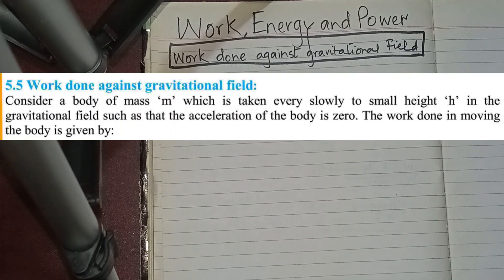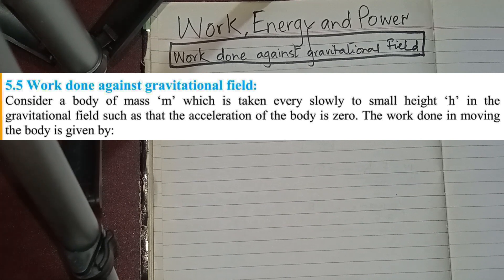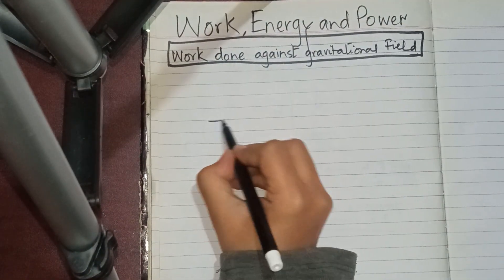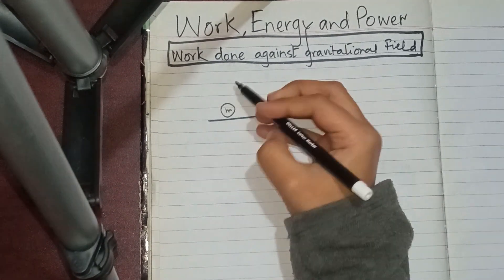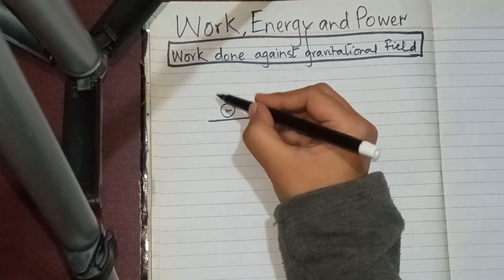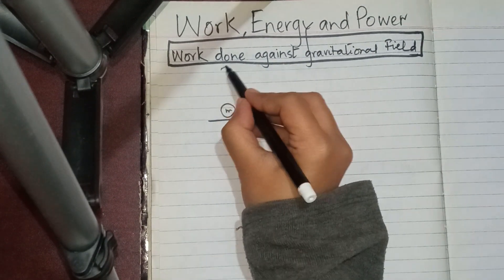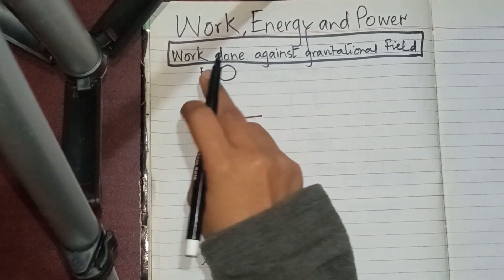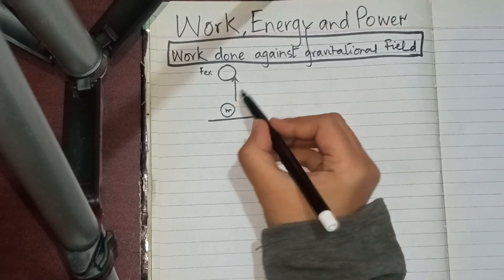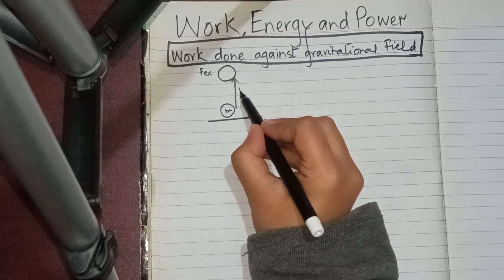Consider a body of mass m which is taken very slowly to a small height h in the gravitational field, such that the acceleration of the body is zero. The work done in moving the body is given as follows. The body has mass m, there is an external force applied upward, and the body has covered a certain height represented by h.